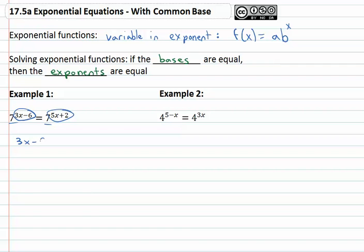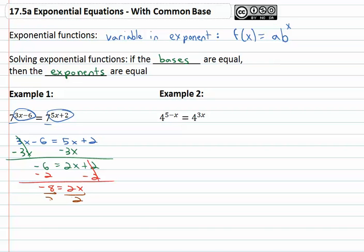And so we'll state that three x minus six is equal to five x plus two, and we now have a simple linear equation we should be very comfortable solving. Subtracting three x from both sides gives us negative six equals two x plus two. Subtracting two from both sides gives us negative eight is equal to two x, and then finally dividing both sides by two gives us x equals negative four. And we found the solution that makes this exponential equation a true equation.